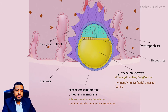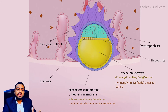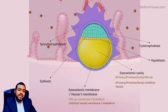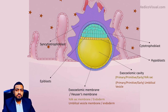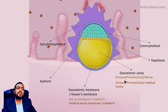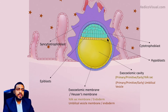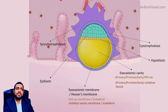What I want to imprint clearly in your mind is that there are several names for this cavity. In some books you will read exocelomic cavity, somewhere you will see yolk sac, somewhere primary yolk sac, somewhere primitive yolk sac, other times early yolk sac, primary umbilical vesicle, and so on. Never get confused — all these names point towards a single structure: the cavity lined by hypoblast and hypoblast-derived flattened cells.